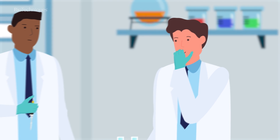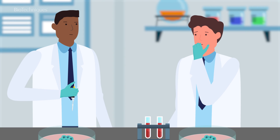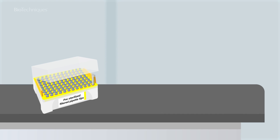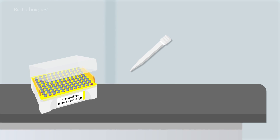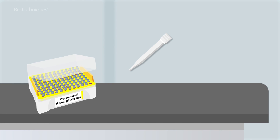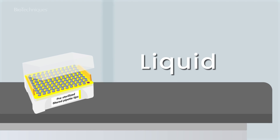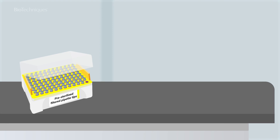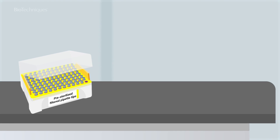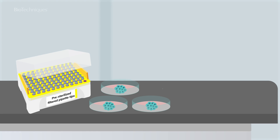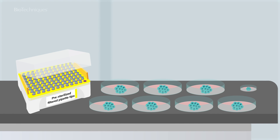Contamination can also impact reproducibility. Pre-sterilised filter tips should be used in cell culture applications, as the filters reduce the risk of cross-contamination. Filter tips can prevent both liquid and aerosol spreading contaminations from reaching the pipette or your sample. Limiting contamination will help make your 3D cell cultures more reproducible.